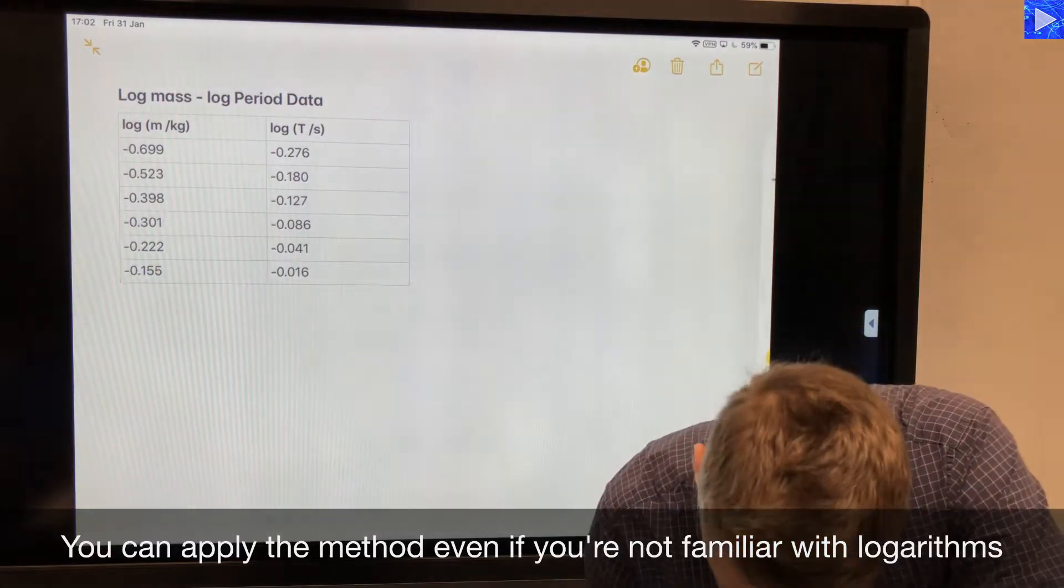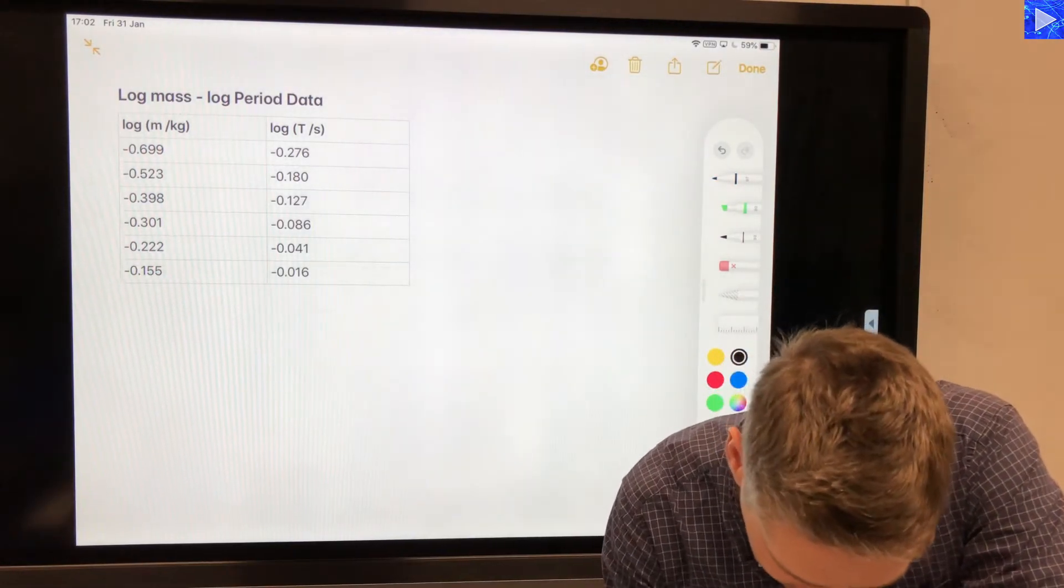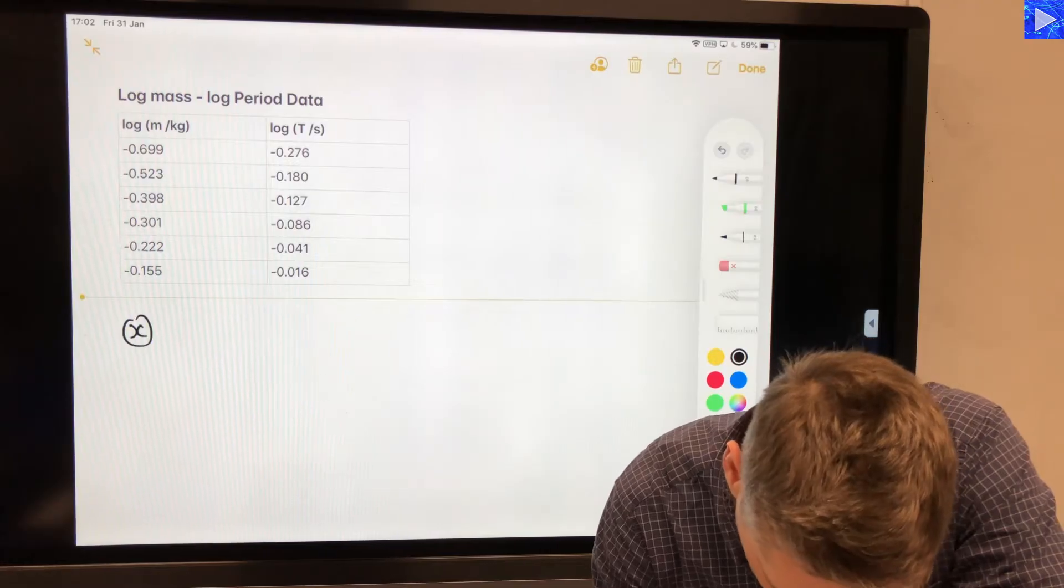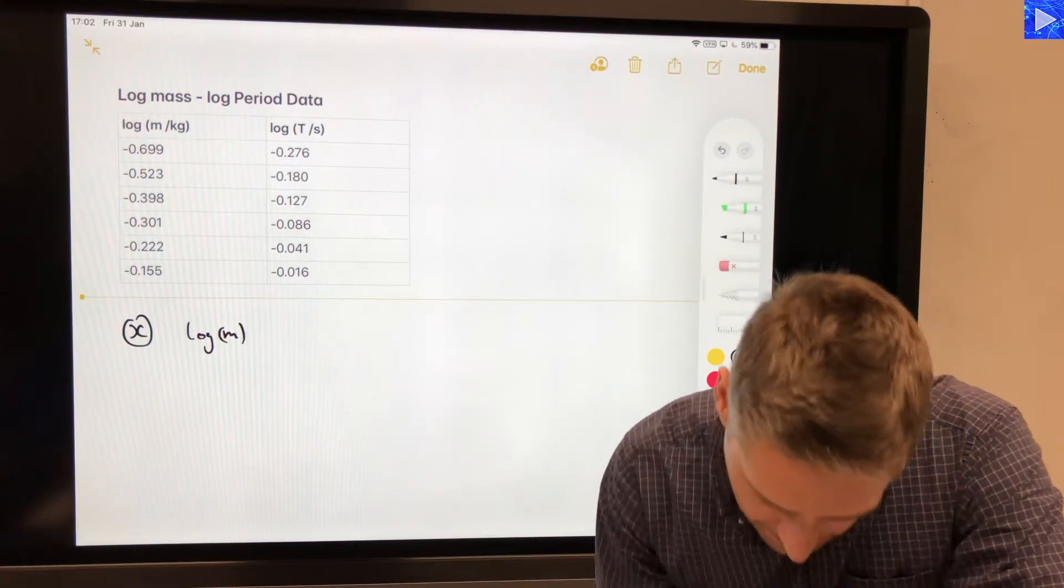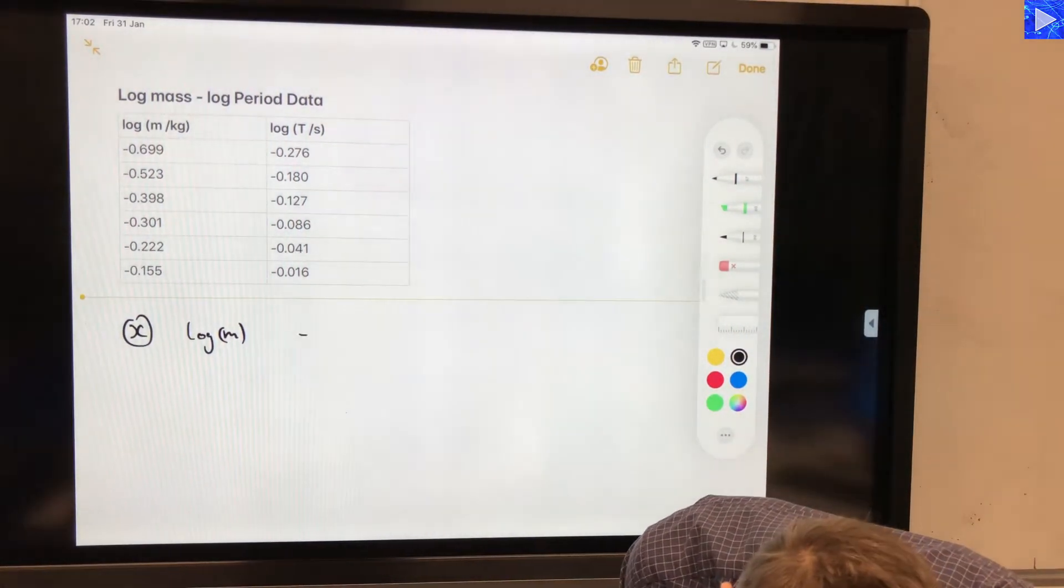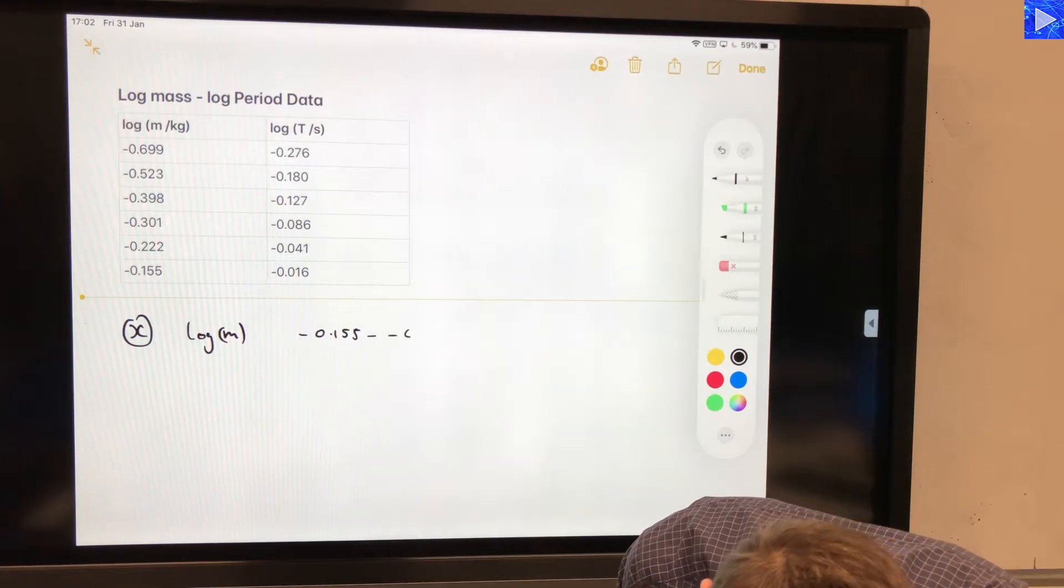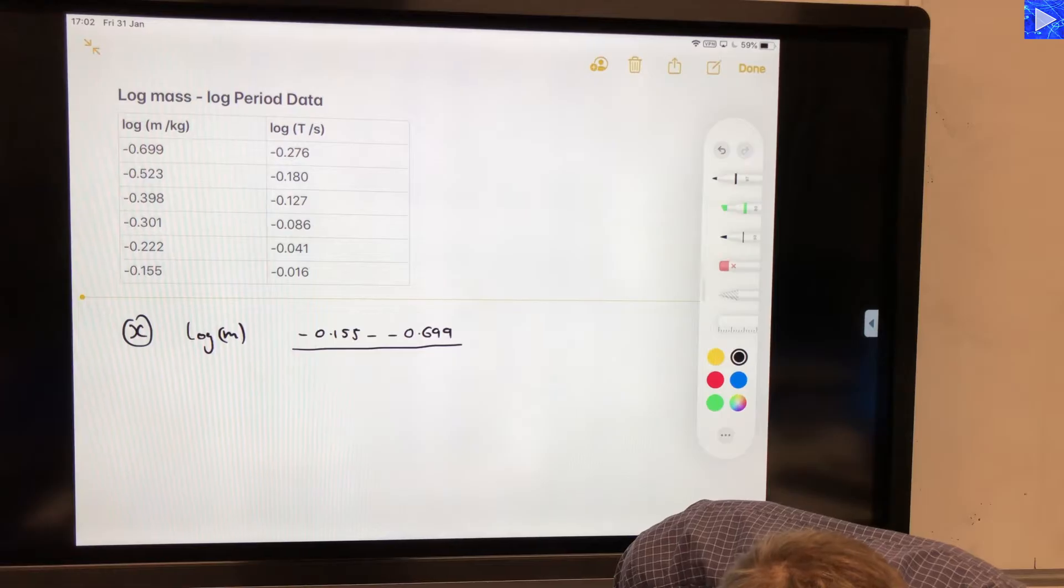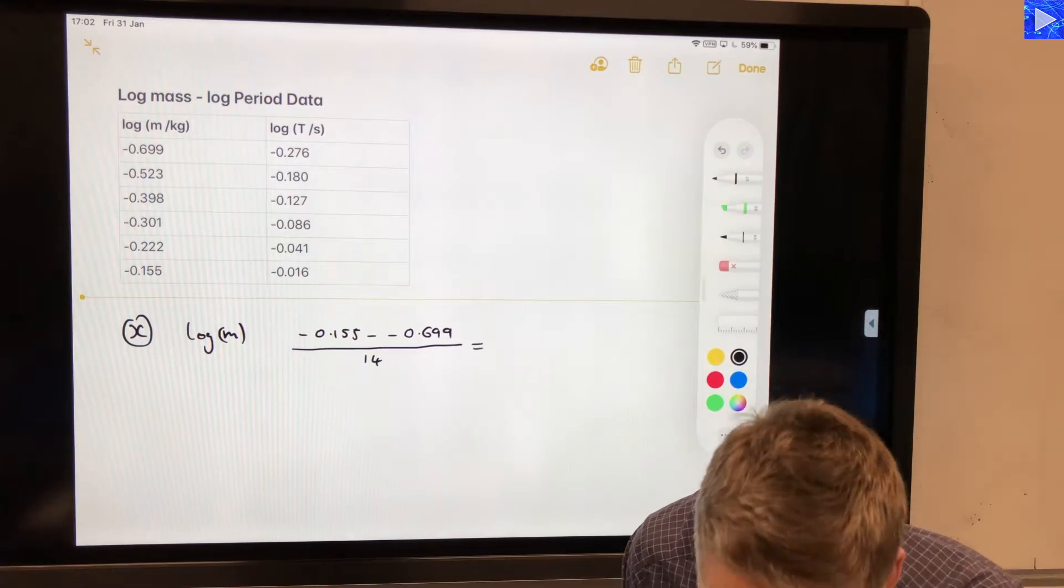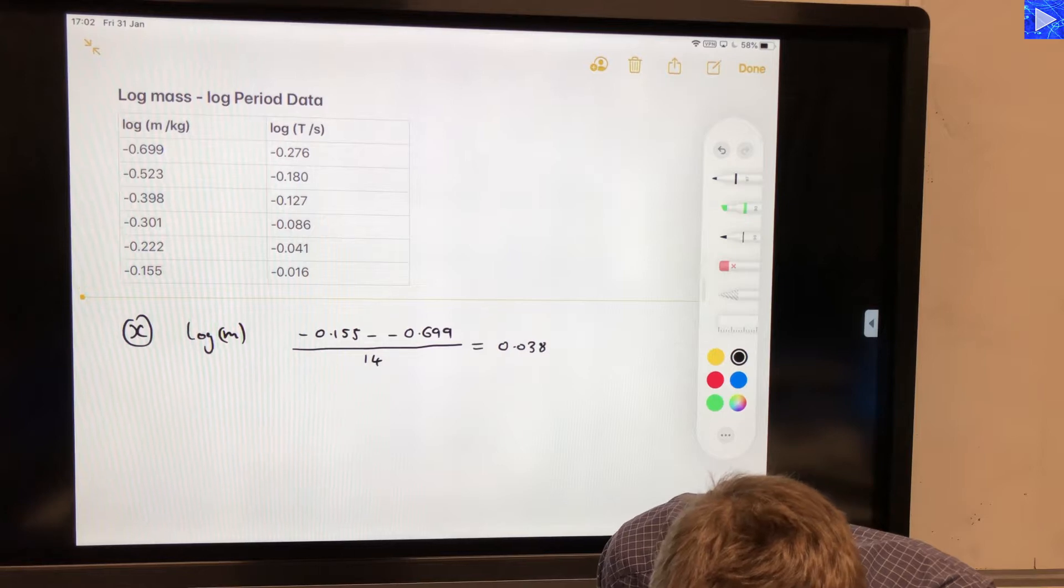So in the x direction log m goes on the x axis, then we've got minus 0.155 minus, and don't forget that this is subtracting our negative, and that will be divided by 14. Now when you do that you get 0.0389.